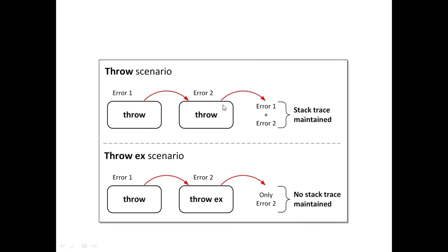This diagram specifies how the throw and throwex scenarios work. If you use only the throw statement and error1 occurs, this error is thrown to the next statement. If error2 also occurs, it will display error1 plus error2 — meaning the stack trace is maintained. In the throwex scenario, when error1 occurs, the exception is thrown to the next statement, but if error2 occurs, it will display only error2, meaning no stack trace is maintained.